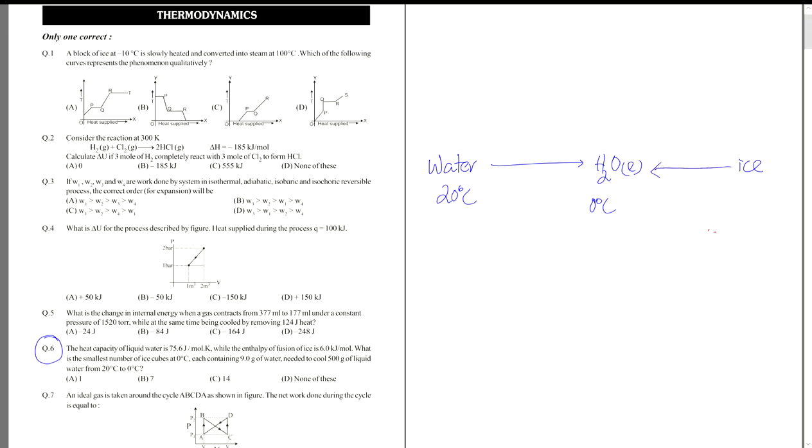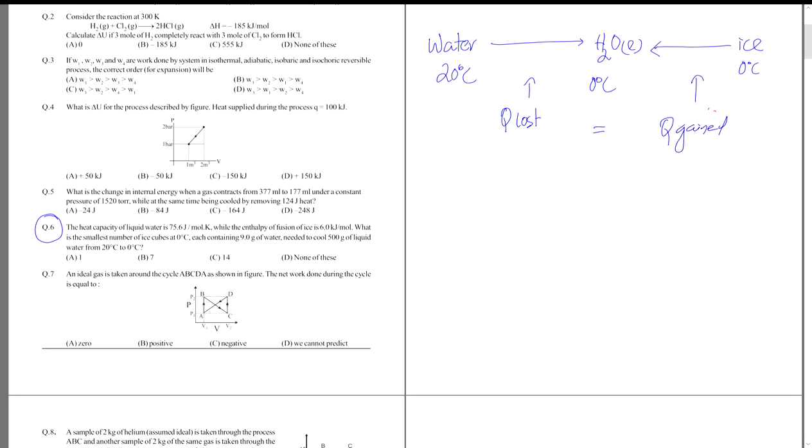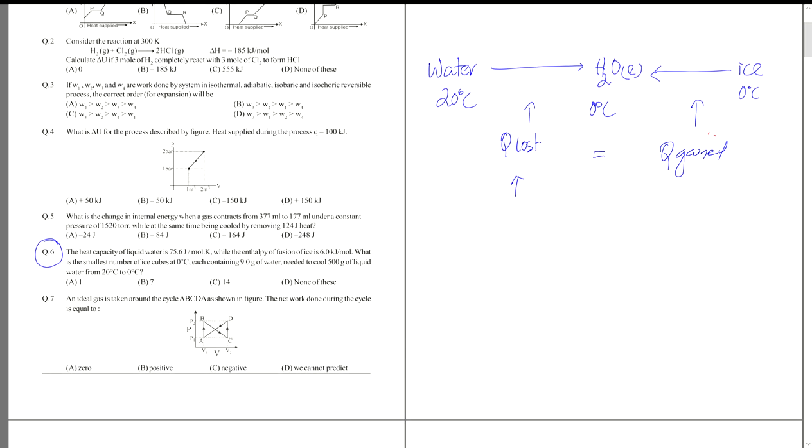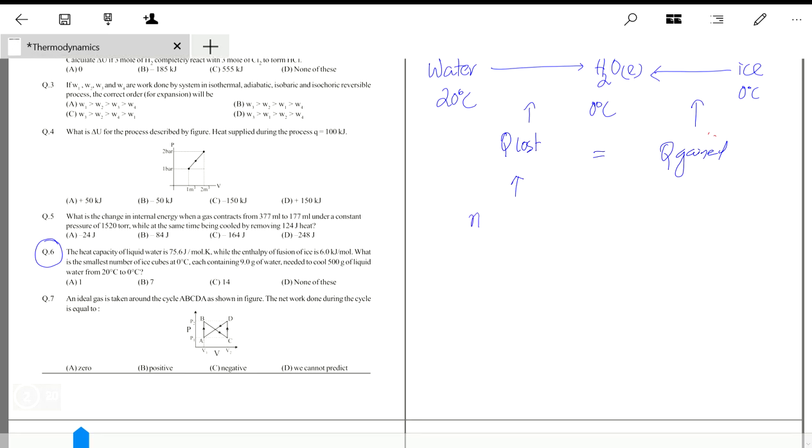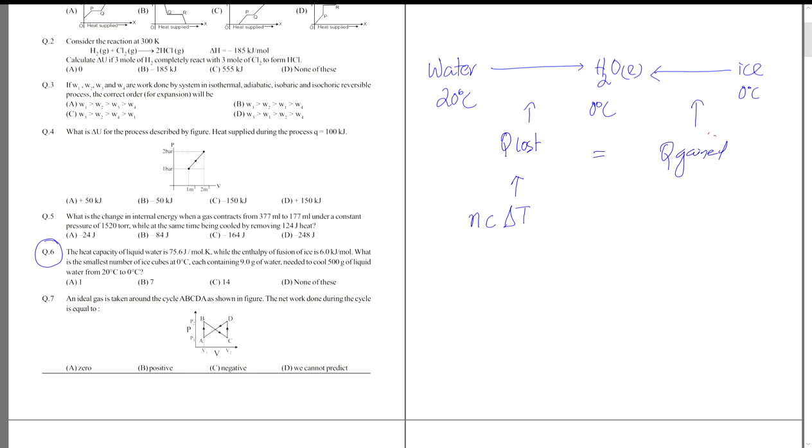The ice gets heated, or rather the ice just melts to become liquid water at zero degrees Celsius. So the heat lost in this part has to be equal to the heat gained in this one. Now for each individual part you can write different equations. For this part, you have to write the heat loss as nc∆t, where ∆t is 20 degrees Celsius. C is given in the question here, 75.6 joules per mole.